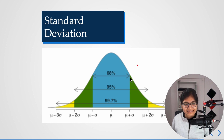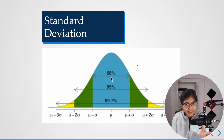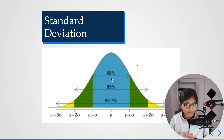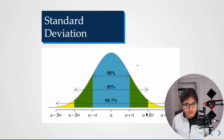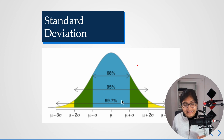Whenever your data range lies from mu minus sigma to mu plus sigma, 68 percent of the data lies there — more than half. When you broaden the range from mu minus 2 sigma to mu plus 2 sigma, 95 percent of the data lies there. And from mu minus 3 sigma to mu plus 3 sigma, 99.7 percent of the data lies there.